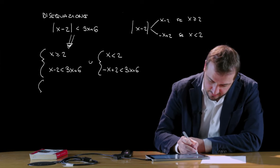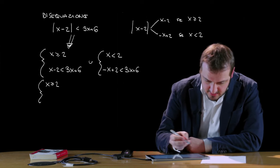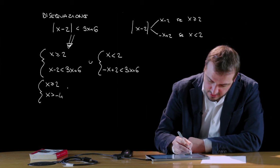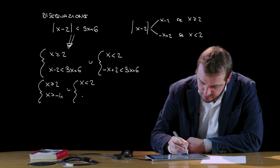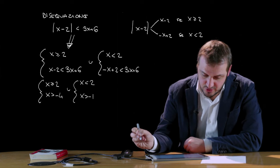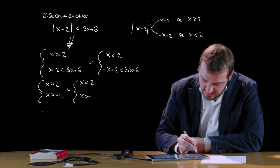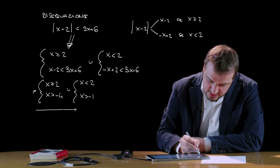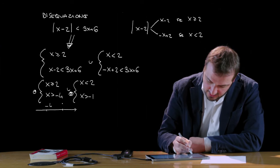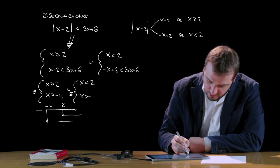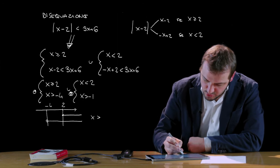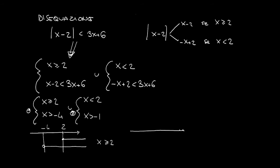Possiamo portare avanti entrambi i sistemi, ottenendo per il primo: x maggiore o uguale di 2, e si può facilmente vedere che la soluzione è x maggiore di meno 4. Per il secondo sistema: x minore di 2, e anche qua la soluzione è x maggiore di meno 1. Rappresentiamo entrambi i sistemi sulla retta orientata: nel primo sistema segniamo meno 4 e 2; la prima condizione è verificata da 2 incluso in poi, la seconda da meno 4 in poi, e quindi la soluzione del primo sistema è x maggiore o uguale di 2. Il secondo sistema con meno 1 e 2 ci dà come soluzione x compreso fra meno 1 e 2.